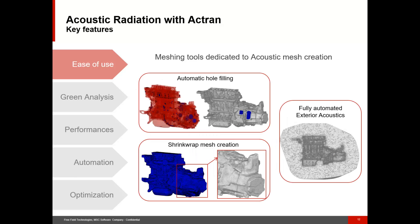We can compute sloshing noise using results from an explicit fluid-structure calculation, or electric engine noise using electromagnetic finite element simulation results. A second very important aspect regarding ease of use is the meshing. For finite element calculations, meshing has always been a complicated task. But with Actron's preprocessor Actron VI, you have access to meshing tools dedicated to acoustic mesh creation, including automatic hole-filling and shrink-wrap functions to create the acoustic coupling surface around your vibrating structure. The exterior volume mesh is then created automatically by the solver during calculation.